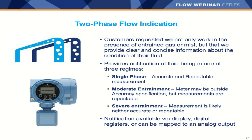The 5700 provides two-phase flow indication — think of it as a green, yellow, and red light for your process. Green means single-phase, accurate and repeatable measurement. Yellow means moderately entrained gas and the meter may be outside accuracy specification. Red means severe entrainment where the meter is likely neither accurate nor repeatable due to severe two-phase flow.